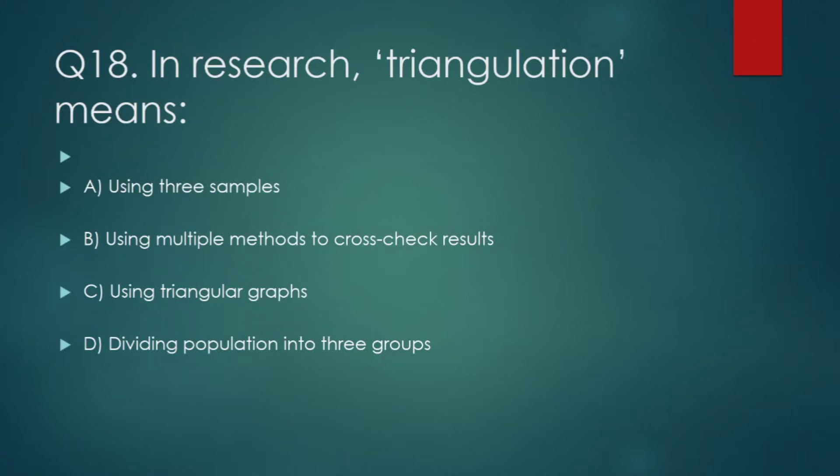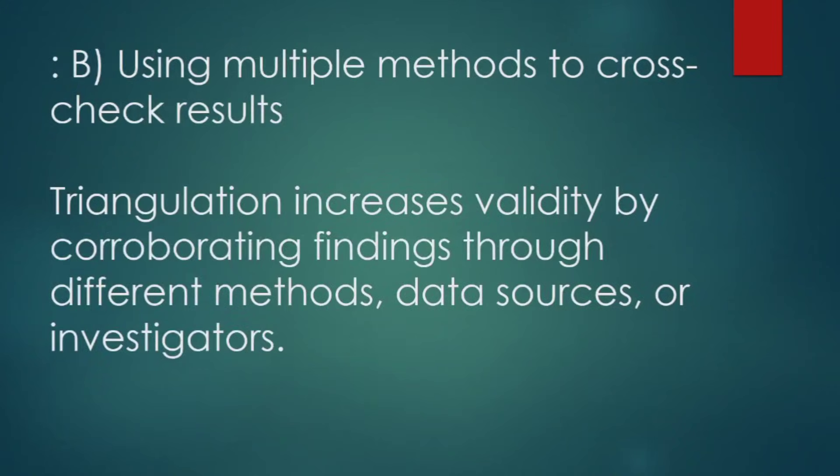In research, triangulation means: (A) using three samples, (B) using multiple methods to cross-check results, (C) using triangular graphs, (D) dividing population into three groups. Correct answer: option B — using multiple methods to cross-check results. Triangulation increases validity by corroborating findings through different methods, data sources, or investigators.